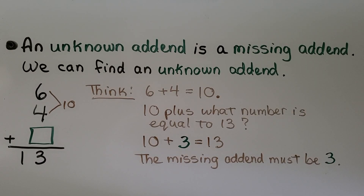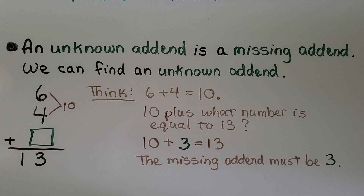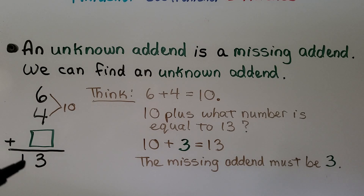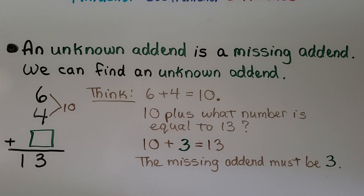An unknown addend is a missing addend, and we can find it. We have six plus four plus some unknown addend that is equal to 13. We think six plus four is equal to 10, and 10 plus what number is equal to 13? Ten plus three is equal to 13, so the missing addend must be three.